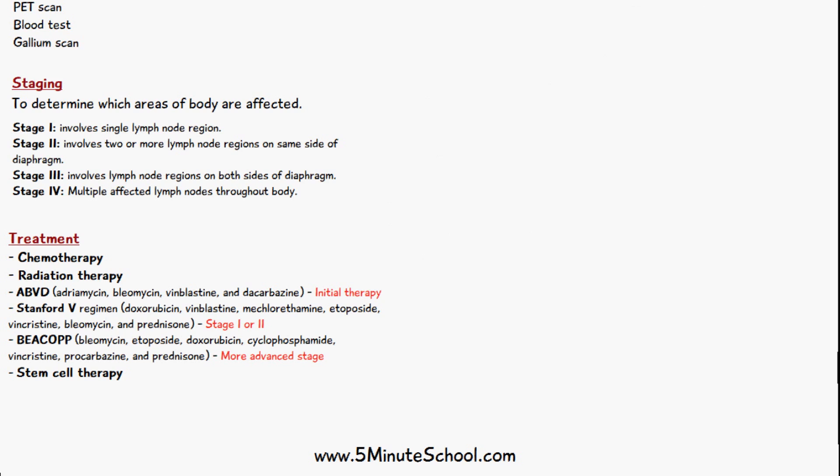For the treatment of Hodgkin's lymphoma there are a few different methods, including chemotherapy and radiation therapy. Certain drugs are given depending on the stage of the lymphoma. The ABVD protocol is usually done at the start and consists of adriamycin, bleomycin, vinblastine, and dacarbazine.